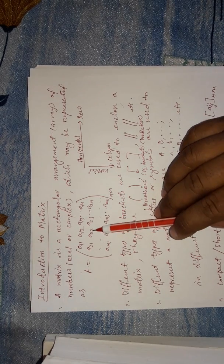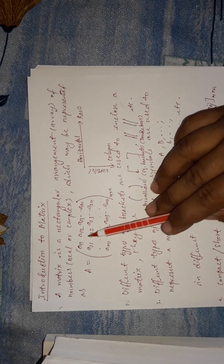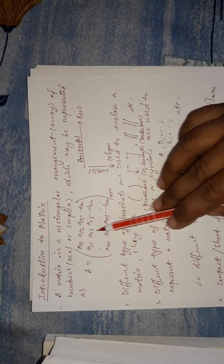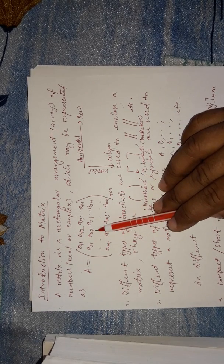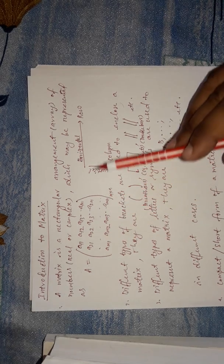Let me explain through one example. Say a_22 — what does this 22 represent? It represents the second row and the second column. So the element at the position of the second row and the second column is denoted as a_22, and so on. I hope you can understand.